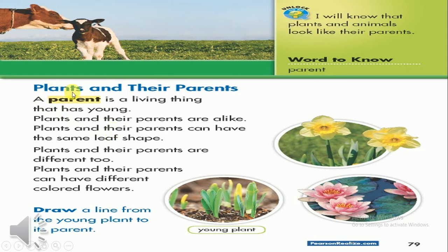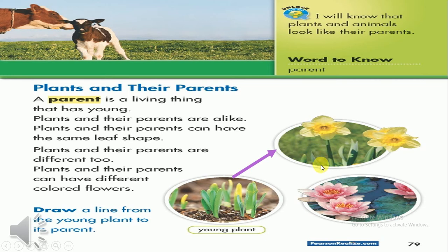Today we're going to talk about plants and their parents. You can see here two plants. Imagine, guys — which one will be the parent of this baby plant, one or two? One — excellent! So this is the parent, the mother or father, to this young plant. Plants and their parents are alike and can have the same leaf shape, like you see here — the leaf shape is the same.